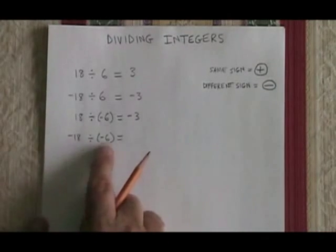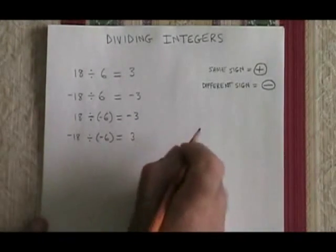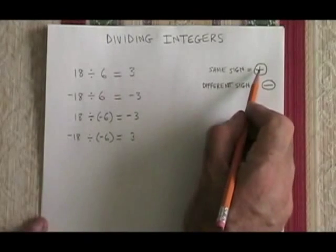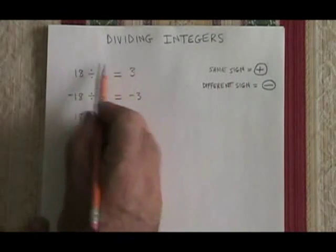Negative 18 divided by negative 6 is equal to 3. This applies to the other rule. They have the same sign, so the answer will be positive. It's the same rule that applied in the very first situation.